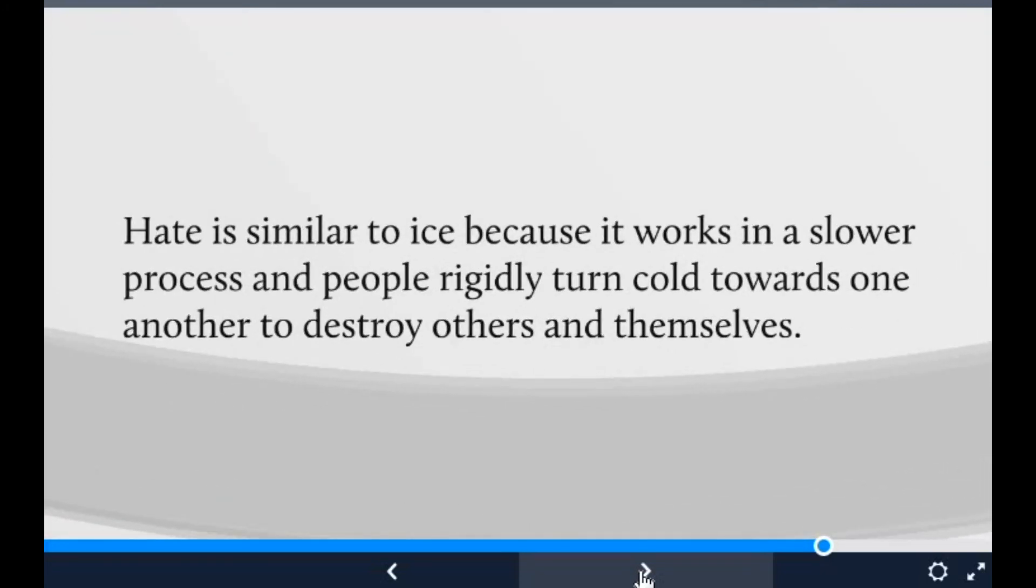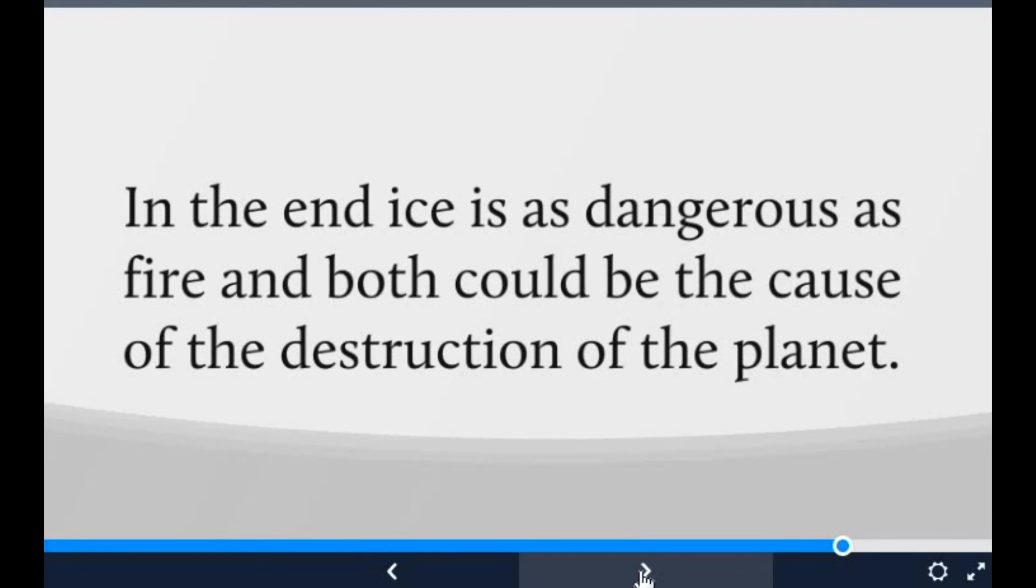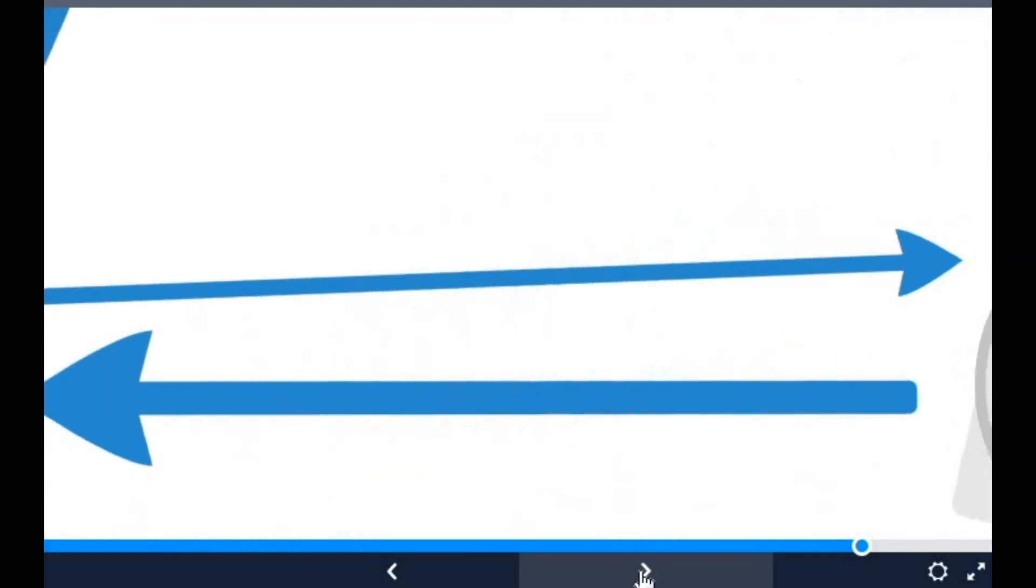Hate is similar to ice because it works in a slower process. Fire's destruction is quite huge—a prominent example is the bush fires in Australia. But ice destroys—its destruction is a bit slower. People rigidly turn cold towards one another to destroy others and themselves. They tend to ignore a person who they hate instead of destroying them, so the destruction of ice can be said to be very slow. In the end, ice is as dangerous as fire, and both could be the cause of the destruction of the planet. Both elements are equally strong.